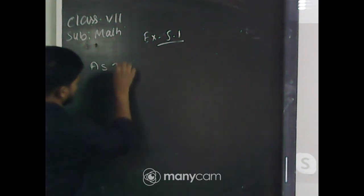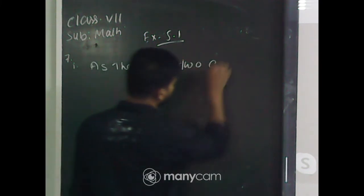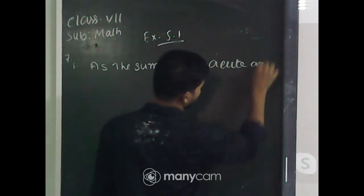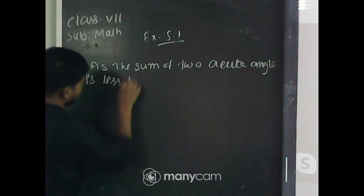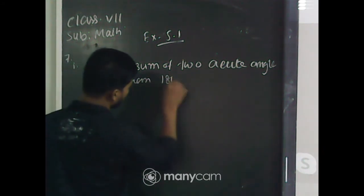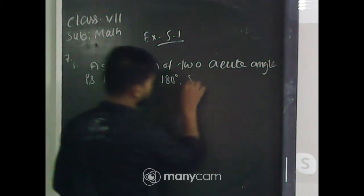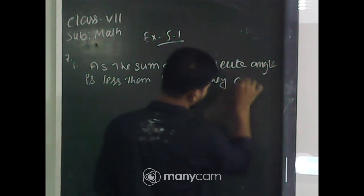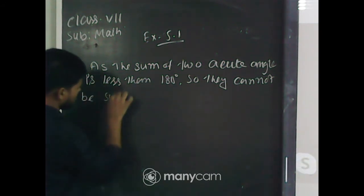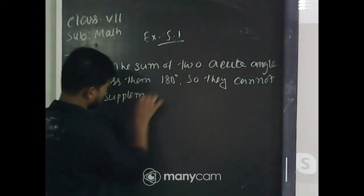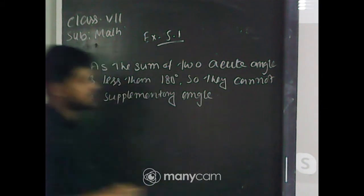As the sum of 2 acute angles is less than 180 degrees, therefore they cannot be supplementary angles to each other.